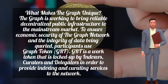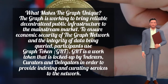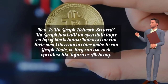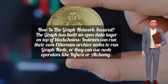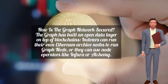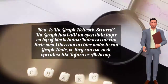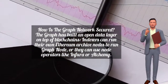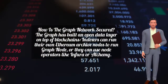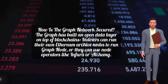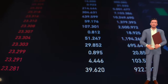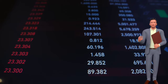GRT is locked up by indexers, curators, and delegators in order to provide indexing and curating services to the network. How is the Graph network secured? The Graph has built an open data layer on top of blockchains. Indexers can run their own Ethereum archive nodes to run Graph Node, or they can use node operators like Infura or Alchemy.